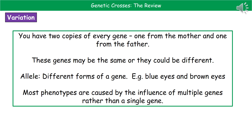Whenever you see the word allele, it's referring to the fact that we get different forms of a gene. For example, you've got a gene for eye colour, but you have alleles for blue eyes, brown eyes, green eyes, etc. All of these genes go together to give us our phenotype — the characteristics that we see. In most cases, phenotypes are caused by multiple genes, not just a single one.